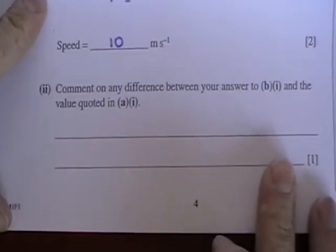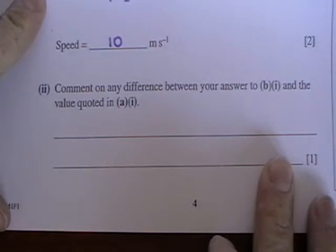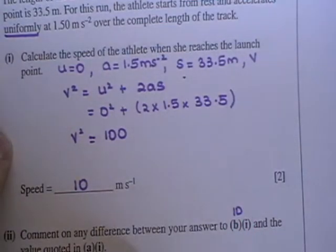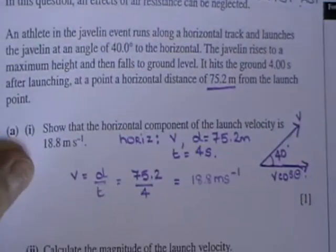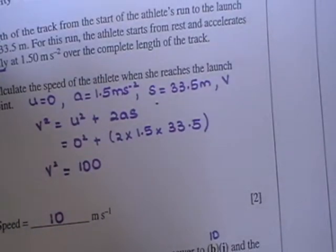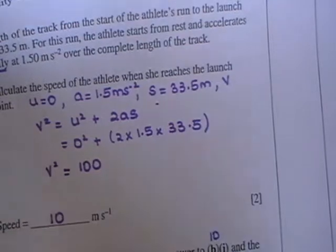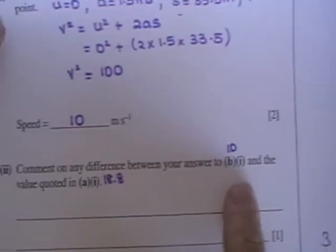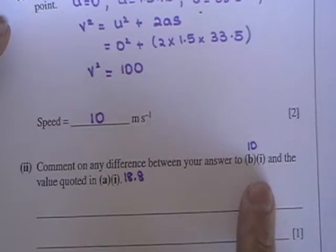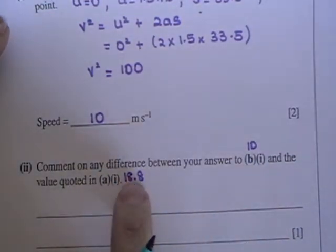Comment on any difference between your answer to B part 1 and the value quoted in A part 1. So B part 1 is 10 and the value quoted in A part 1, i.e. the javelin, is actually 18.8. So when the athlete has stopped running, she's running at a speed of 10, but she or he launches a javelin at 18.8. So what is the difference?